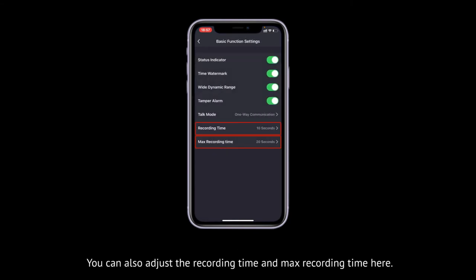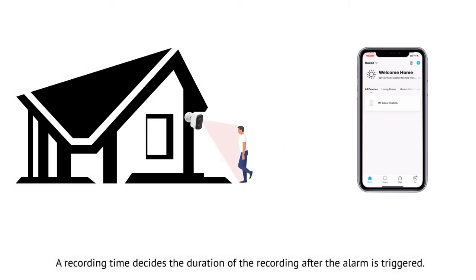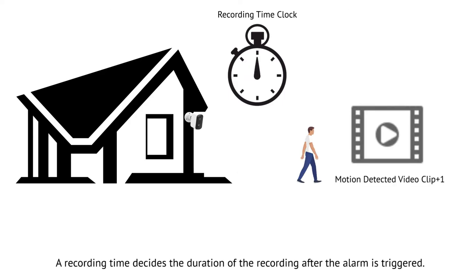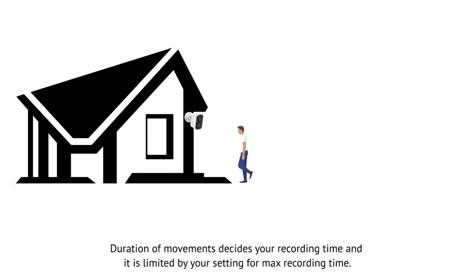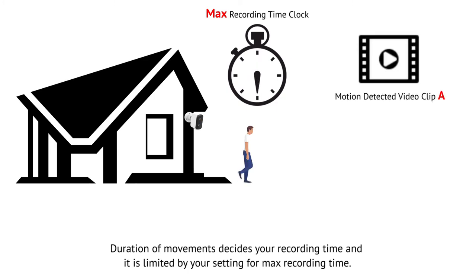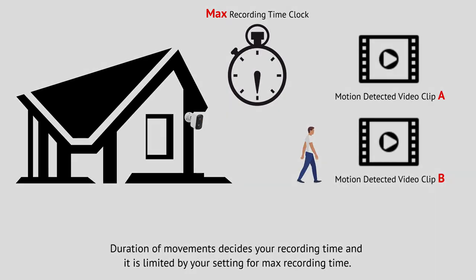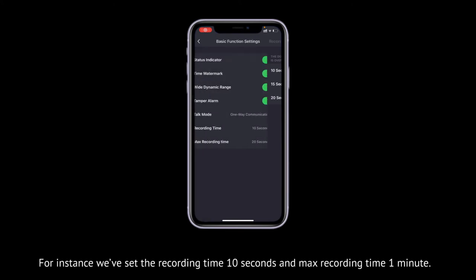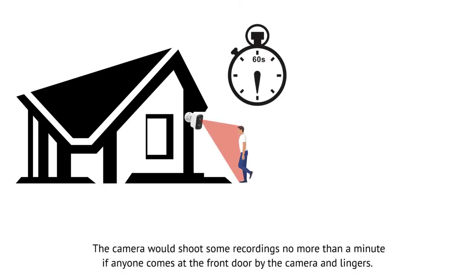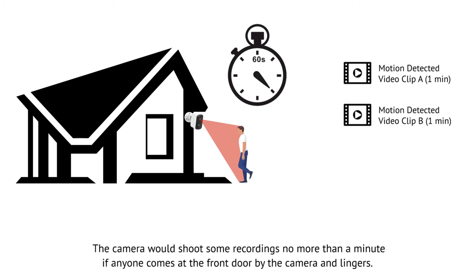You can also adjust the recording time and max recording time here. The recording time decides the duration of the recording after the alarm is triggered. The duration of movement decides your recording time and is limited by your setting for max recording time. For instance, we've set the recording time to 10 seconds and max recording time to 1 minute. The camera will shoot recordings no more than a minute if anyone comes to the door and lingers.